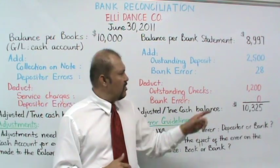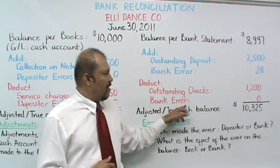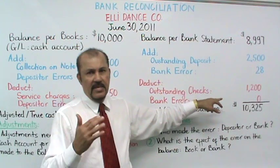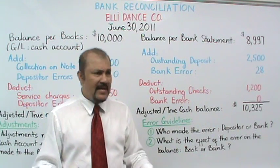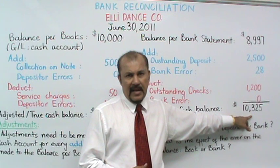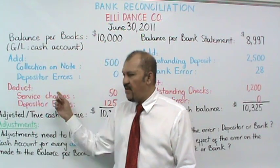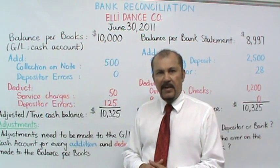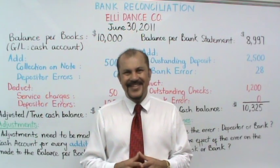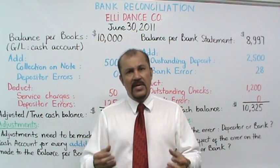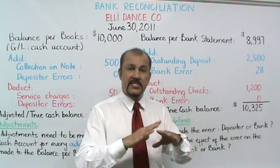Therefore, to reconcile the two balances, we need to reduce the bank statement balance by $1,200. There were no bank errors affecting the bank balance from a deduction standpoint, so we have zero there. Going through the math, we end up with $10,325 as our adjusted balance — our true cash balance. That's the same number we arrived at when making adjustments to the book balance. Our true cash balance was neither the book balance nor the bank balance, but an entirely different number.